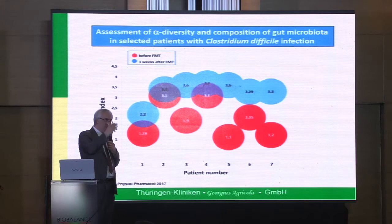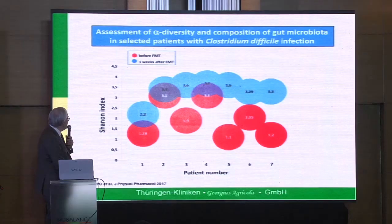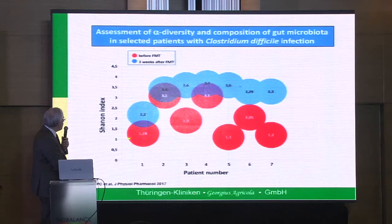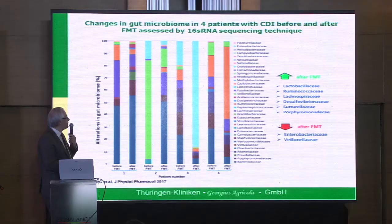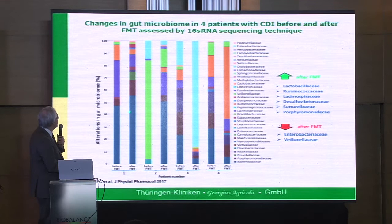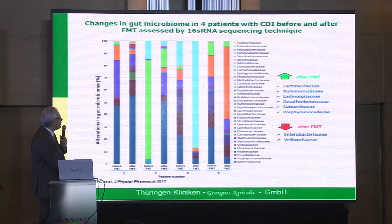We looked also at diversity — higher diversity means our gut is healthier. Diversity was very low, about 1 to 1.5 before FMT, and after FMT we have a significant increase in microbiome diversity. We also looked at sequence analysis — we have a significant change in bacterial taxa after FMT. We have an increase of bacteria like Lactobacillaceae, Ruminococcaceae, or Lachnospiraceae — important for anti-inflammatory effects — and less pro-inflammatory bacteria like Enterobacteriaceae or Veillonellaceae.